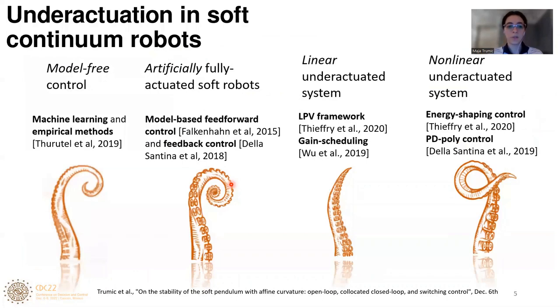Regarding the underactuation, there have been different approaches to control a soft robot. One approach is to use model-free control such as machine learning and empirical methods. One can assume artificially that soft robots are fully actuated and then apply model-based feed-forward control or feedback control. Another solution is to linearize the soft robot and then apply LPV framework or gain-scheduling control, or assume that the system is non-linear underactuated and then use energy shaping control and PD-poly control.